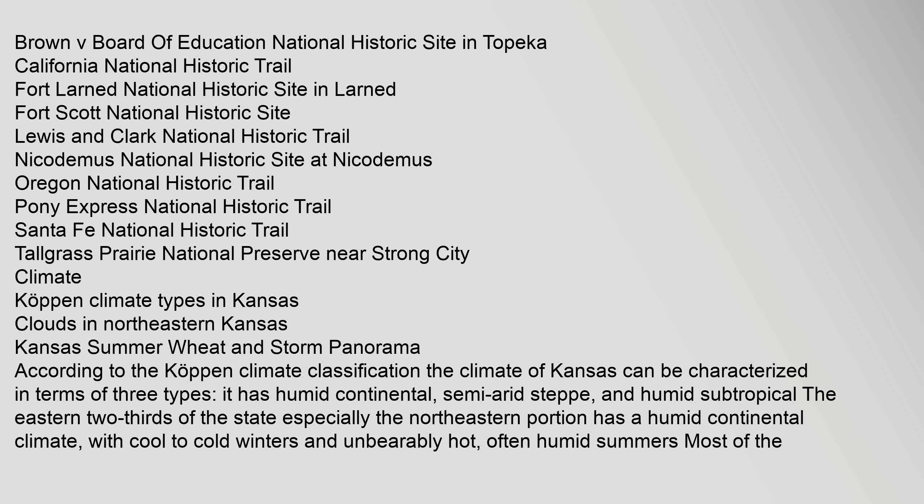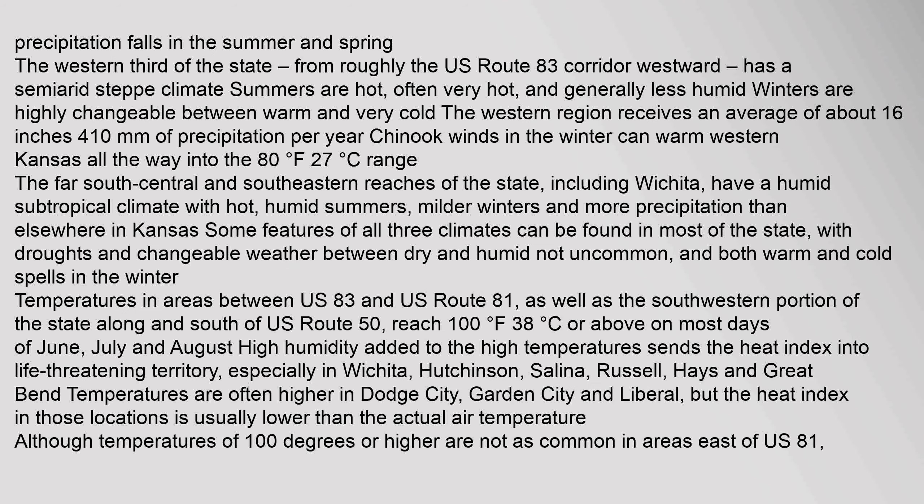According to the Köppen Climate Classification, the climate of Kansas can be characterized in terms of three types: humid continental, semi-arid steppe, and humid subtropical. The eastern two-thirds of the state, especially the northeastern portion, has a humid continental climate with cool to cold winters and unbearably hot, often humid summers. Most of the precipitation falls in the summer and spring. The western third of the state, from roughly the U.S. Route 83 corridor westward, has a semi-arid steppe climate. Summers are hot, often very hot, and generally less humid. Winters are highly changeable between warm and very cold.